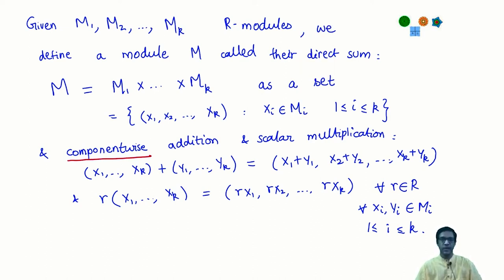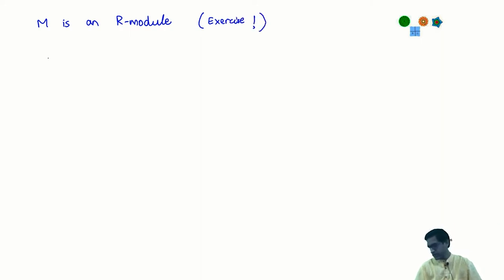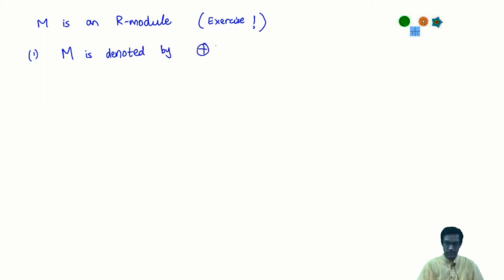It is very easy to check that this makes M into a module — I will leave that as an exercise. Every axiom you need to check will hold because it holds in each component. This module M is called the direct sum of the M_i's and is usually denoted by the symbol ⊕M_i, i ranging from 1 to k.